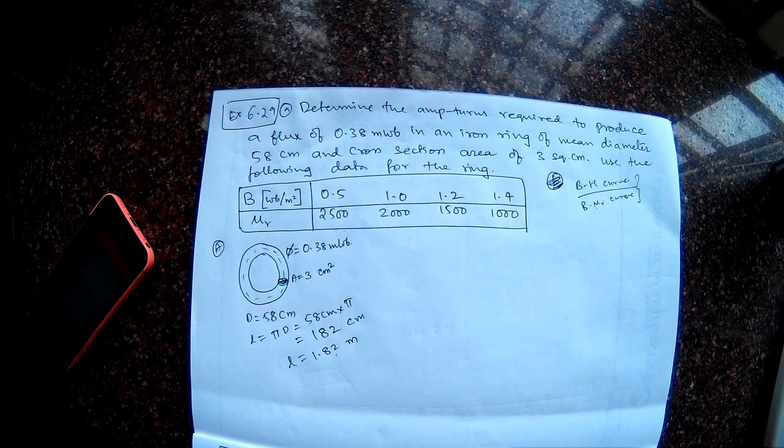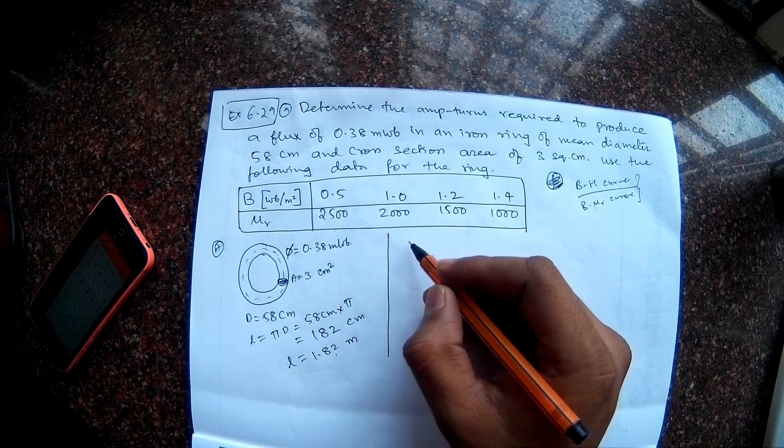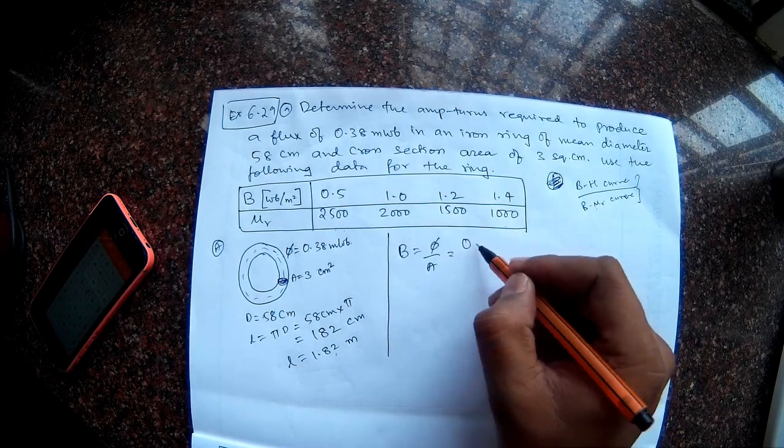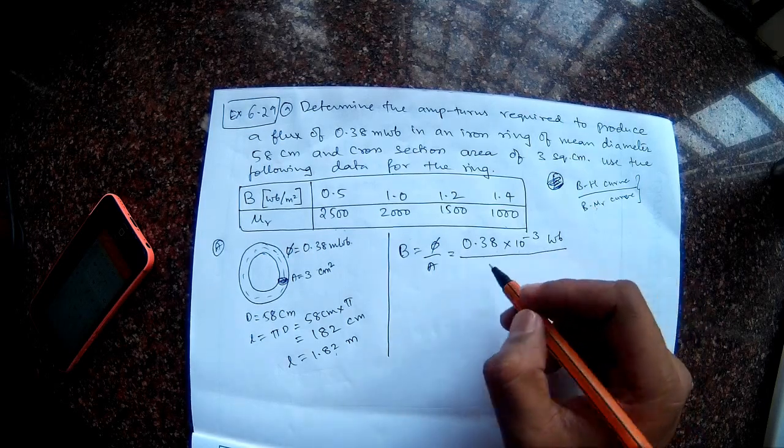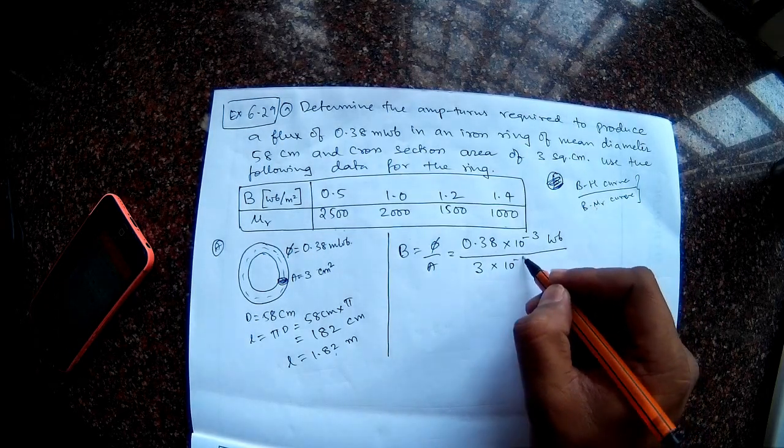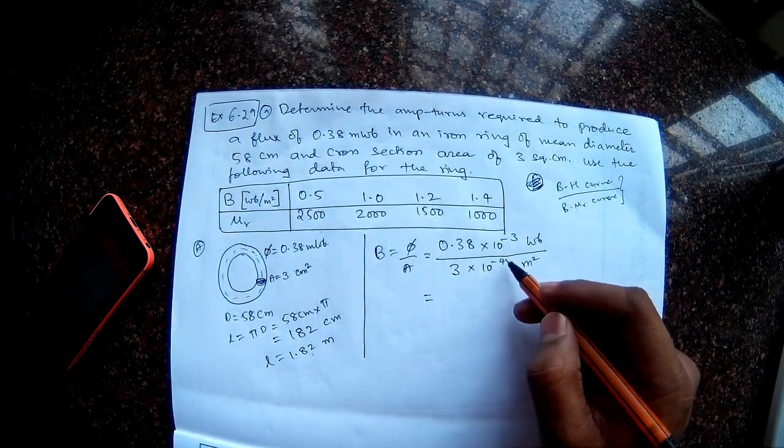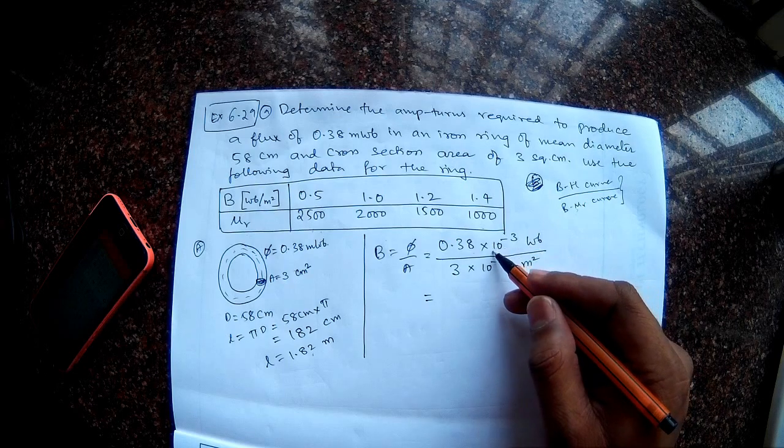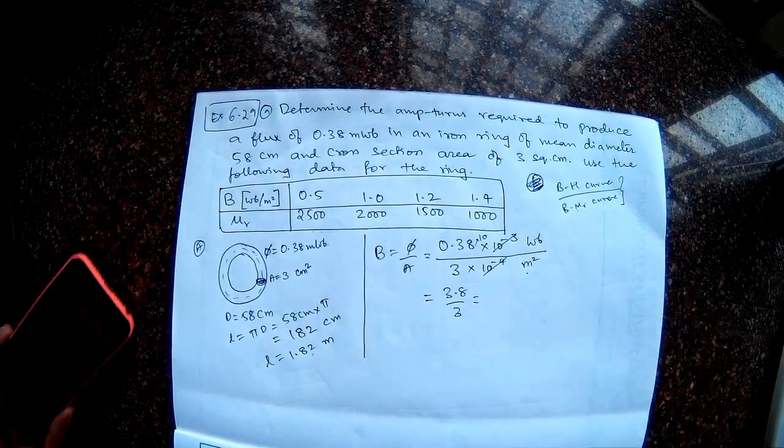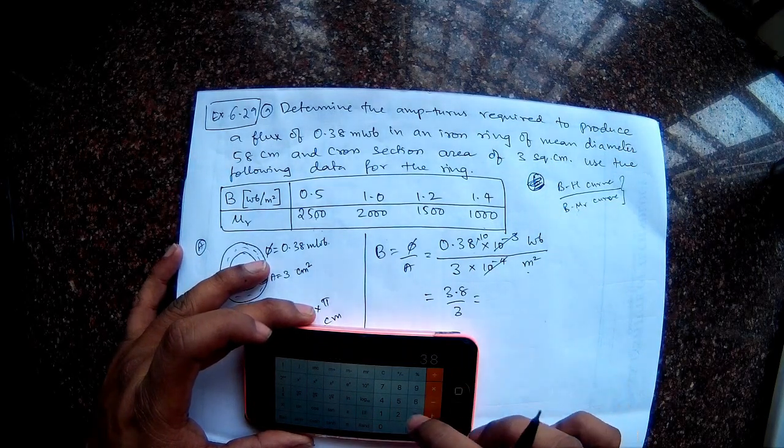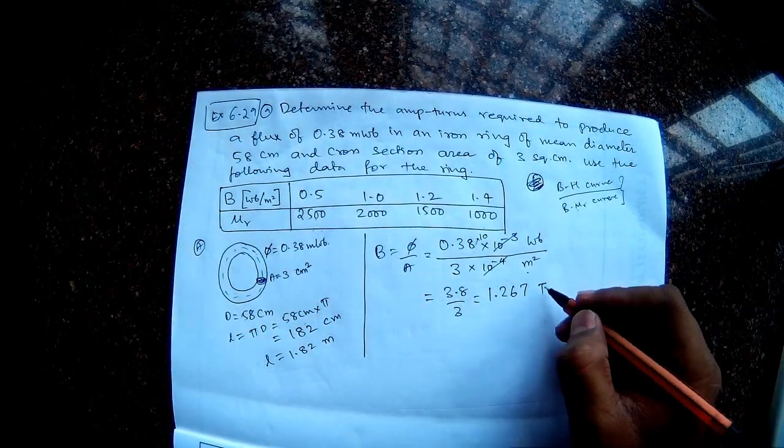Now what is the flux density? So flux is given and area is given, so flux density is flux per unit area. So 0.38 milliwebers, that means 10 to the power of minus 3 webers divided by area of cross section is 3 cm square, that is 3 into 10 to the power of minus 4 meter square. So webers per meter square should be the unit for the flux density. So let's calculate this. So 10 power 3 and 10 power 4, 5 cancel, so I get a 10 at the numerator. So I will get 3.8 divided by 3. So 3.8 divided by 3, so I am getting 1.267 tesla. So this is the flux density. Tesla is nothing but webers per meter square.